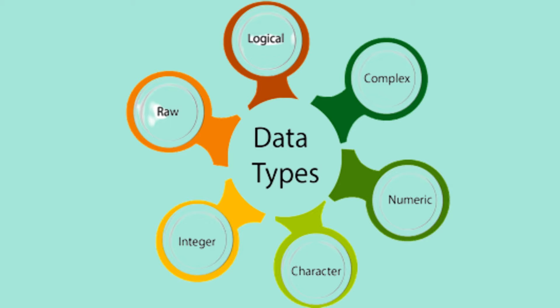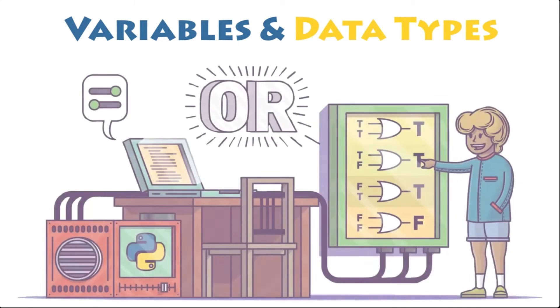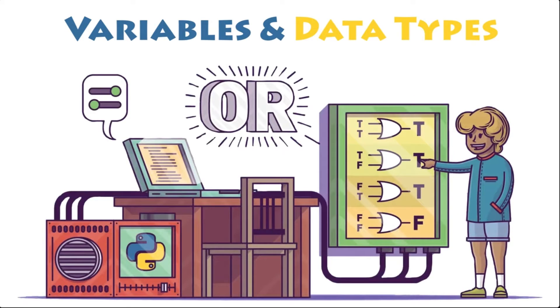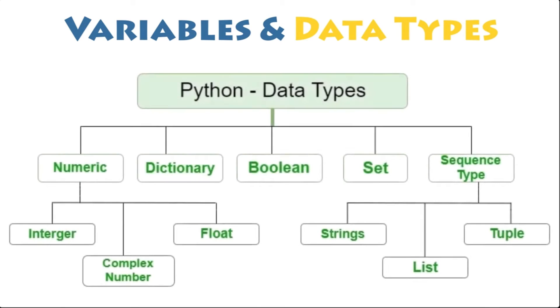Let's start by discussing data types. Data types is a classification of types of data that a variable or an object can hold in a program. For example, in real life, we classify people by their age, height, weight, etc. Similarly, in programming, we classify data based on its type.